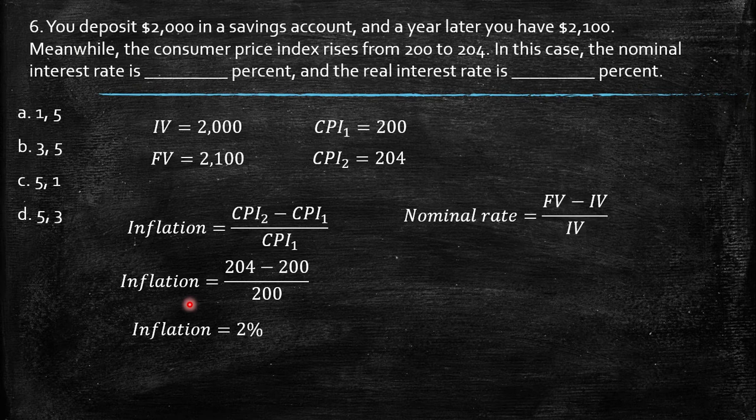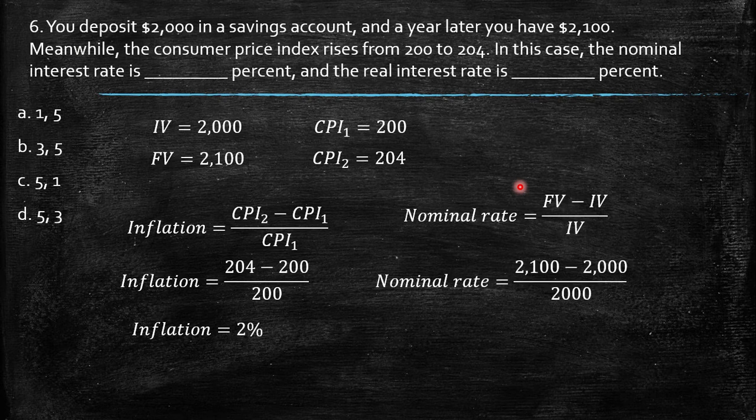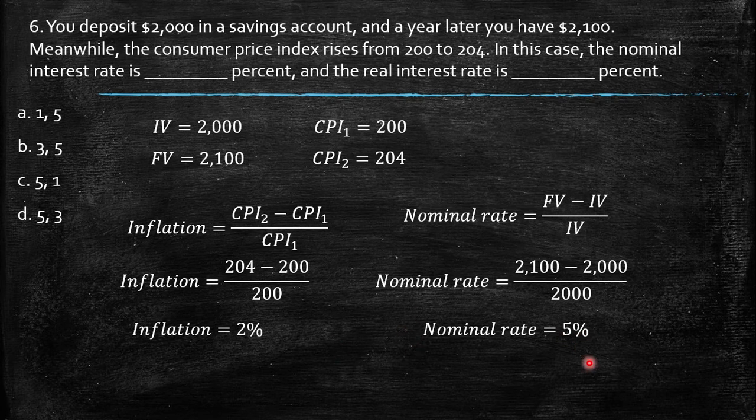Then what is the nominal rate? The nominal rate should be naturally the change between these two values, which is provided by the final value minus initial value over initial value. So you just replace and then you get at the end of the day 5%. So then you have already the nominal rate.